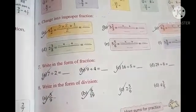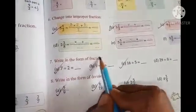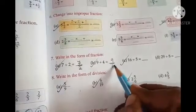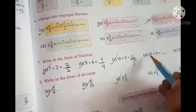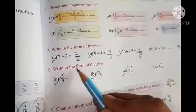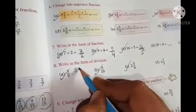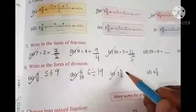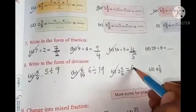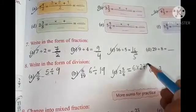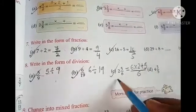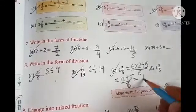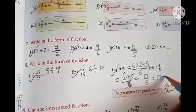Question number 7: write in the form of a fraction. 9 divided by 4 is written as 9 by 4. 16 divided by 5 is written as 16 by 5. Do the rest on your own. Question 8: write in the form of division — just the reverse. 5 by 9 becomes 5 divided by 9. 6 by 19 becomes 6 divided by 19. If given in mixed form, first convert to improper: for 6 and 5 by 7 — wait, 6 twos are 12 plus 5 by 6, giving 17 by 6, written as 17 divided by 6.